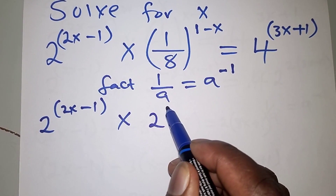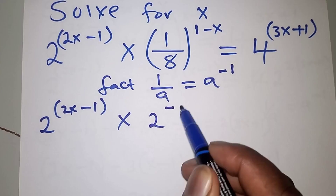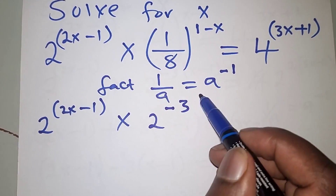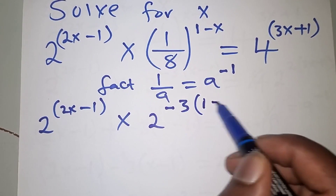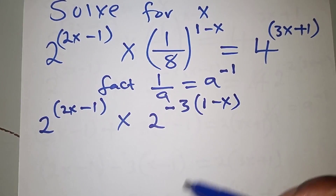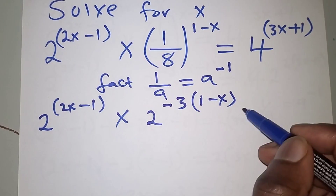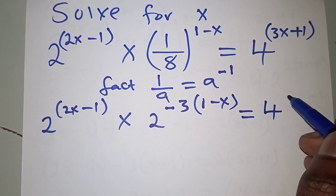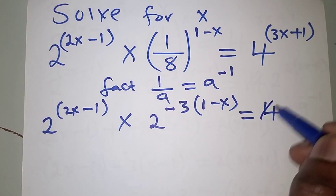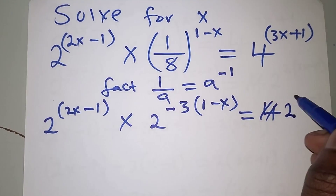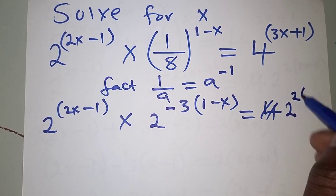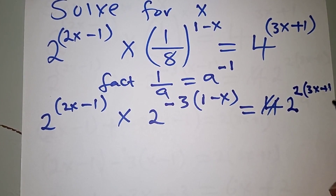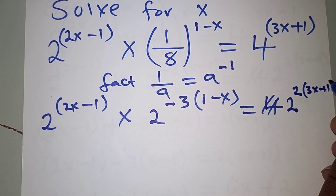We rewrite the question as 2 to the power 2x minus 1, times 2 to the power negative 3. Note that 2 to the power 3 is 8, so 2 to the power negative 3 is 1 over 8. On the other side we have 2 to the power 3x plus 1. We are putting them under the same base so that we can eliminate the bases.